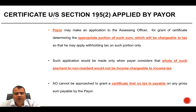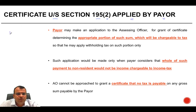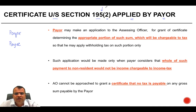Certificate under Section 195(2) applied by the payer. In a transaction there will be two people — the payer, who is making the payment, and the payee. The application under Section 195(2) is made by the payer.